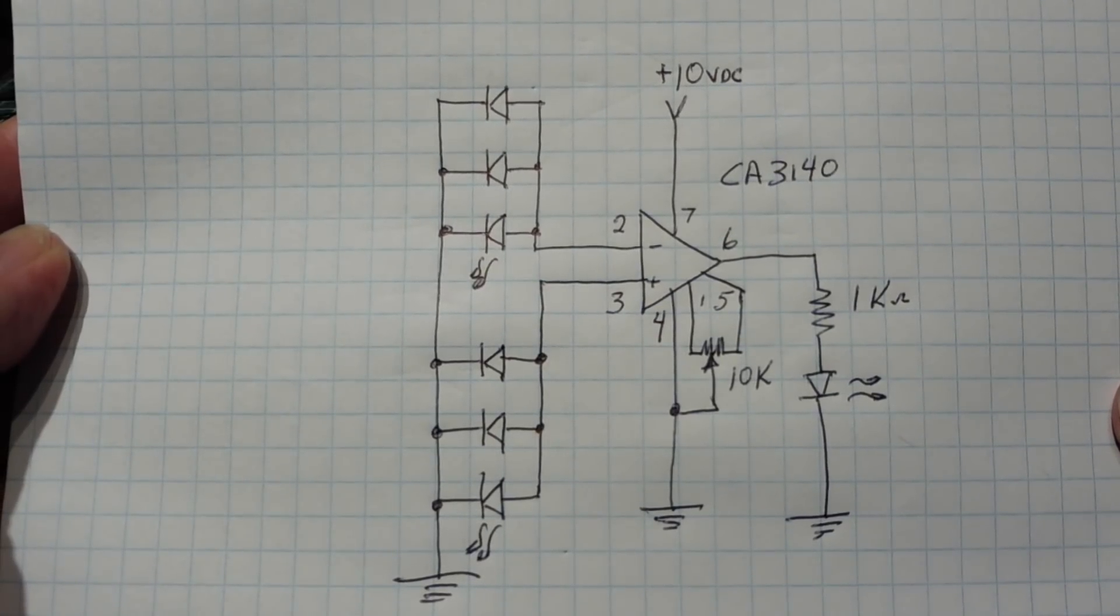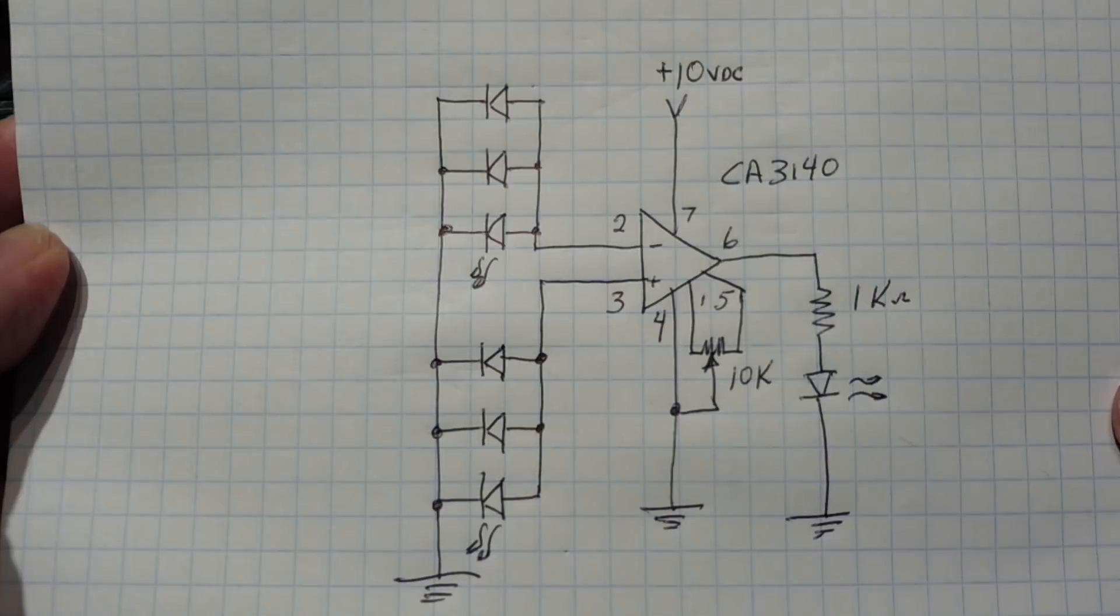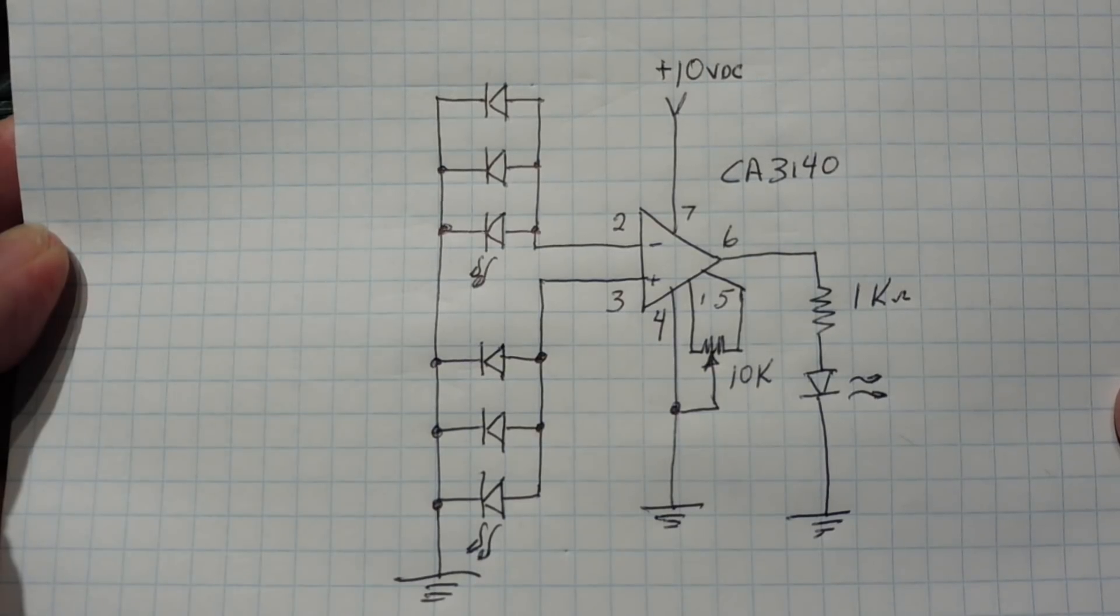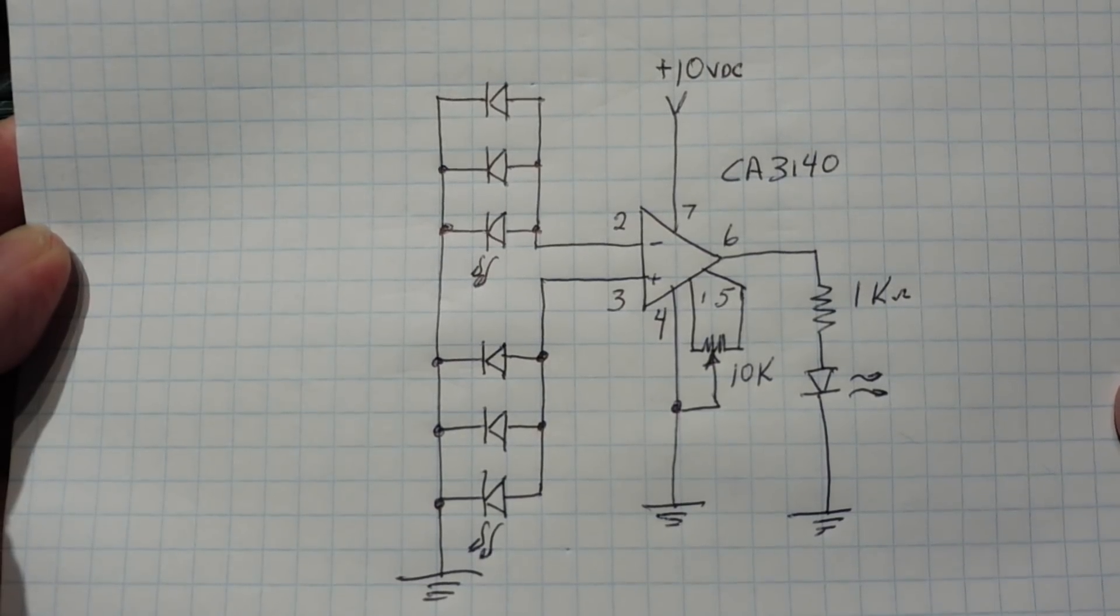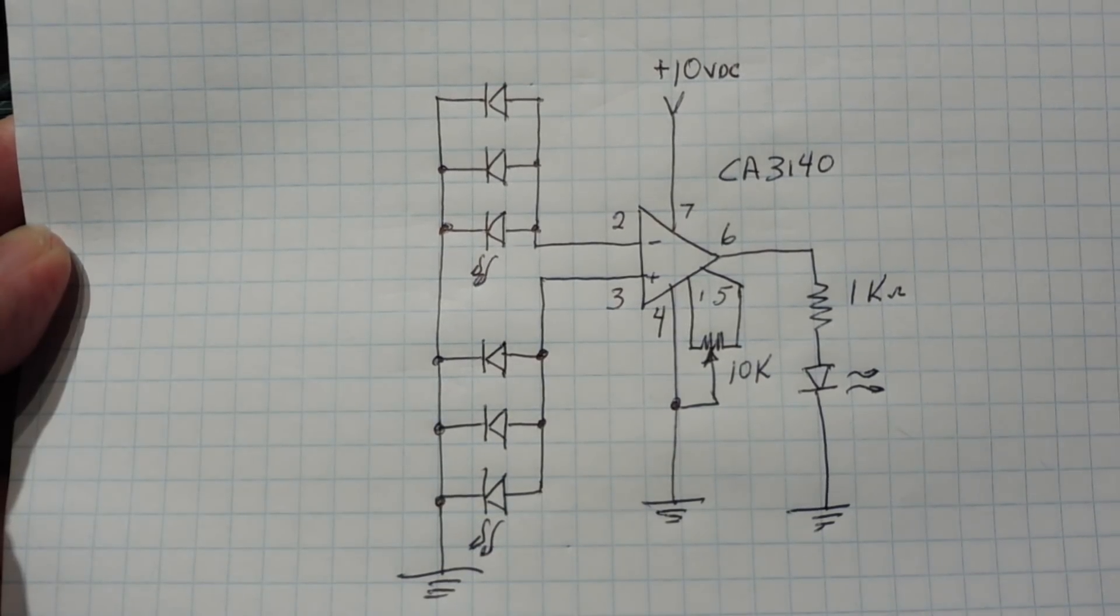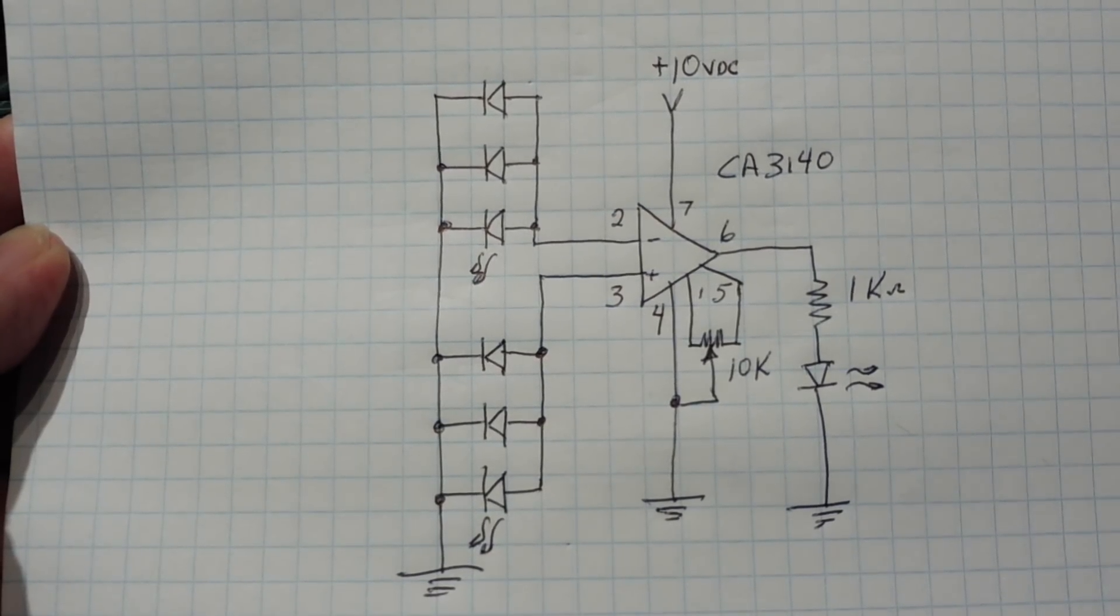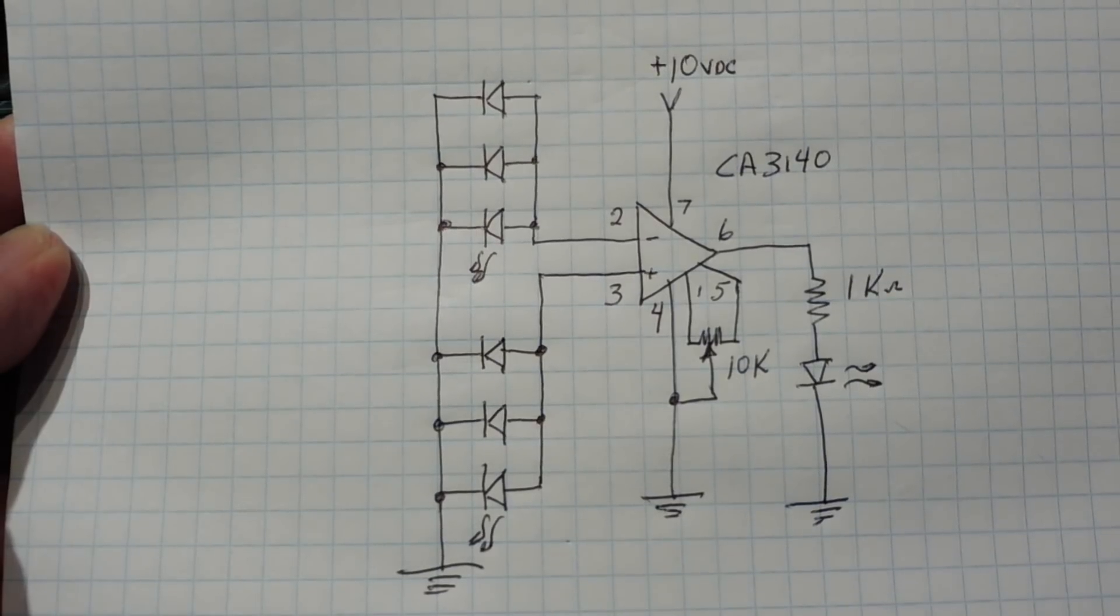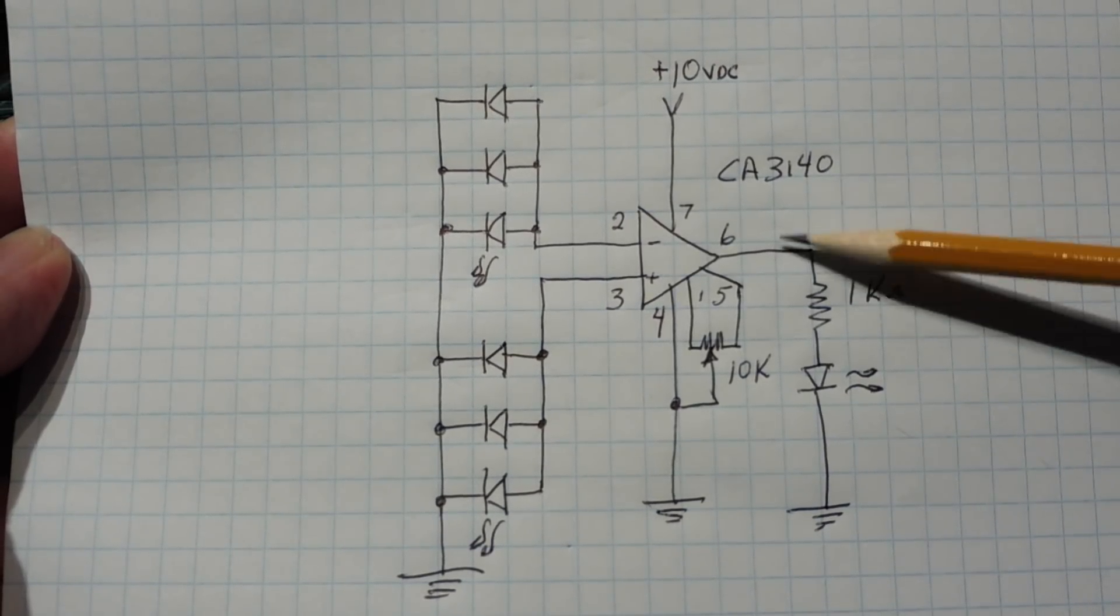Okay, here's a schematic diagram of my light detection circuit, which uses LEDs as a light sensor. Now the heart of the circuit is an op-amp, and I'm using a CA3140 op-amp, but you could use any general-purpose op-amp. And the op-amp is configured as a voltage comparator, as you can see there's no feedback paths.